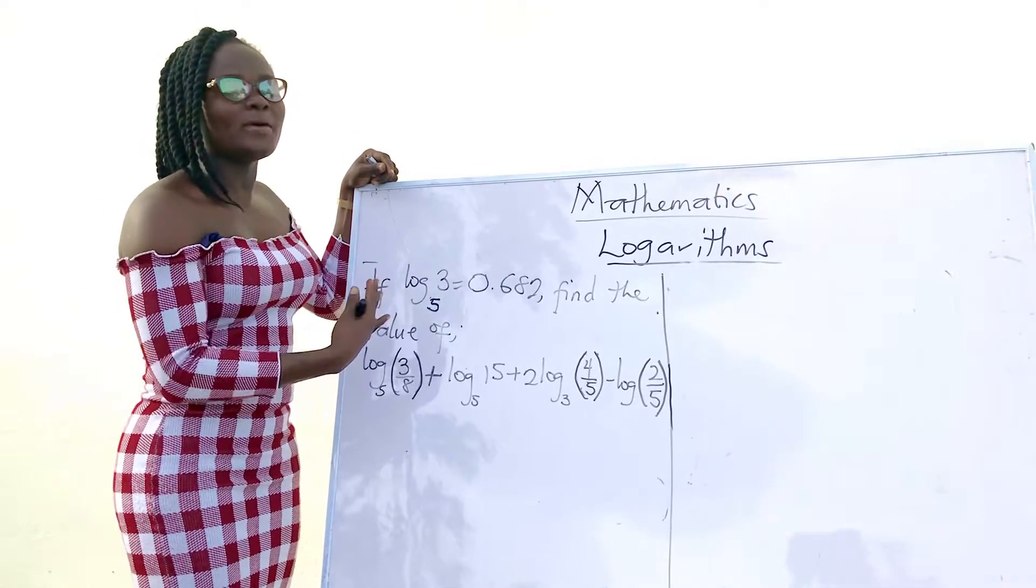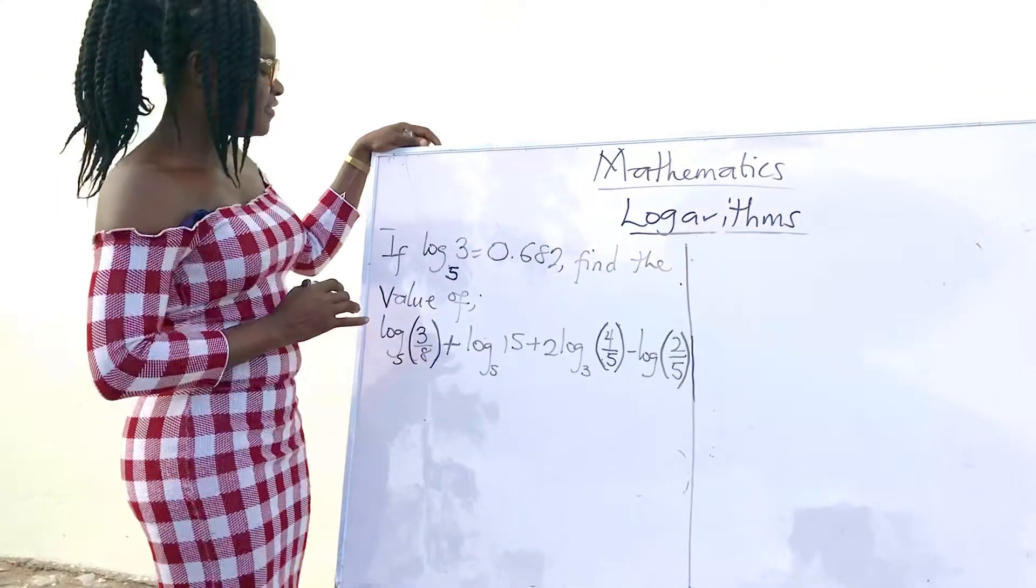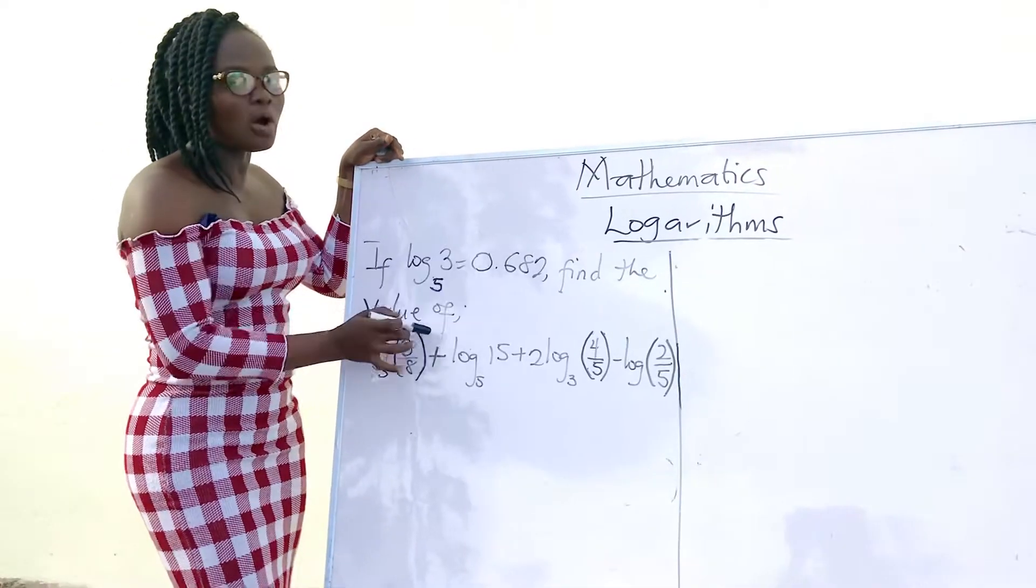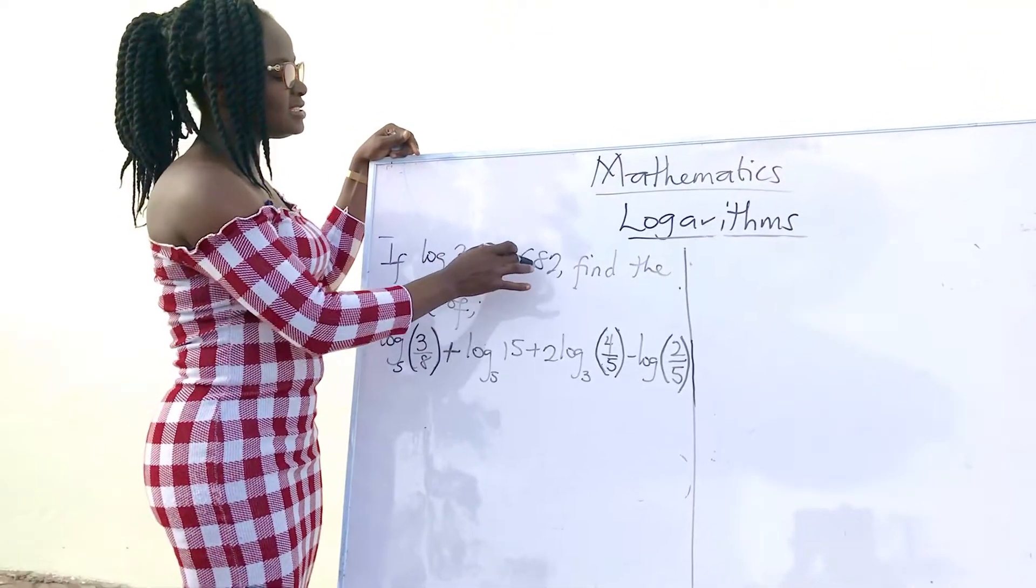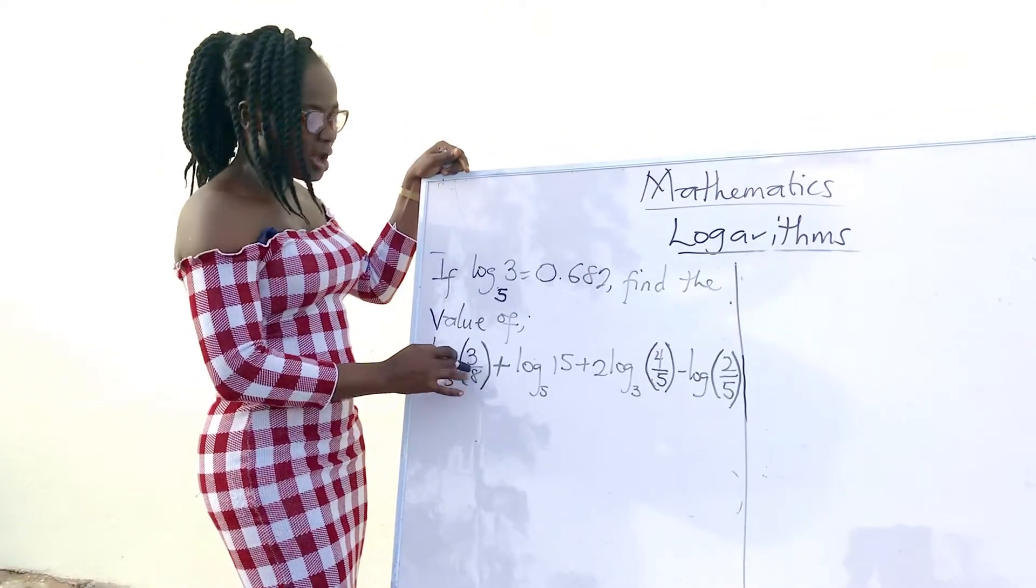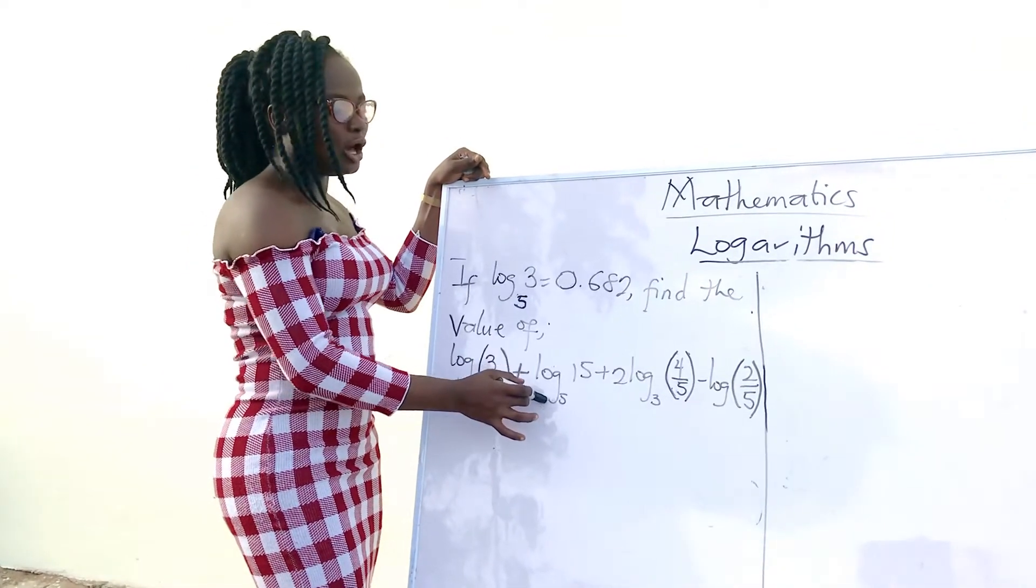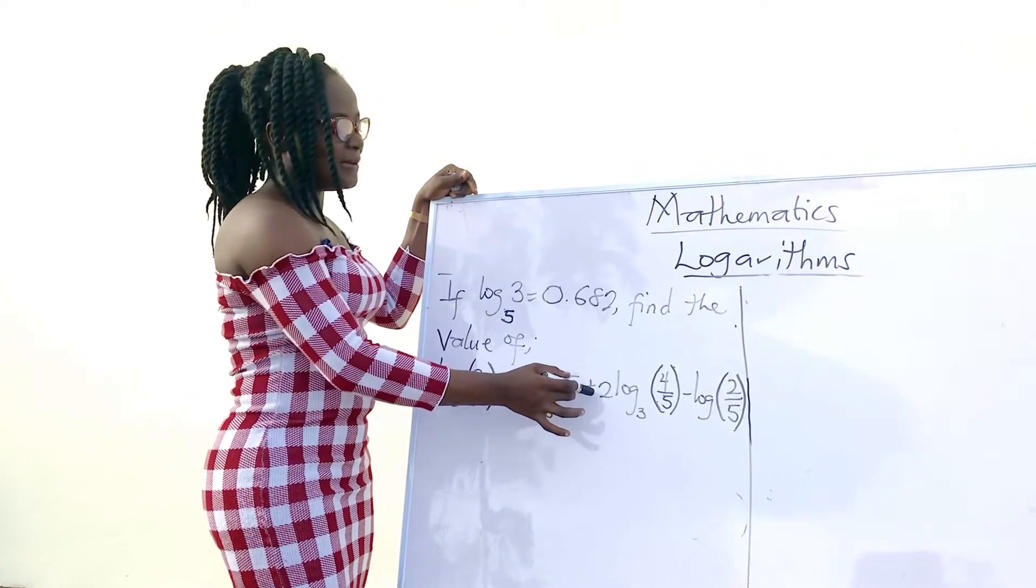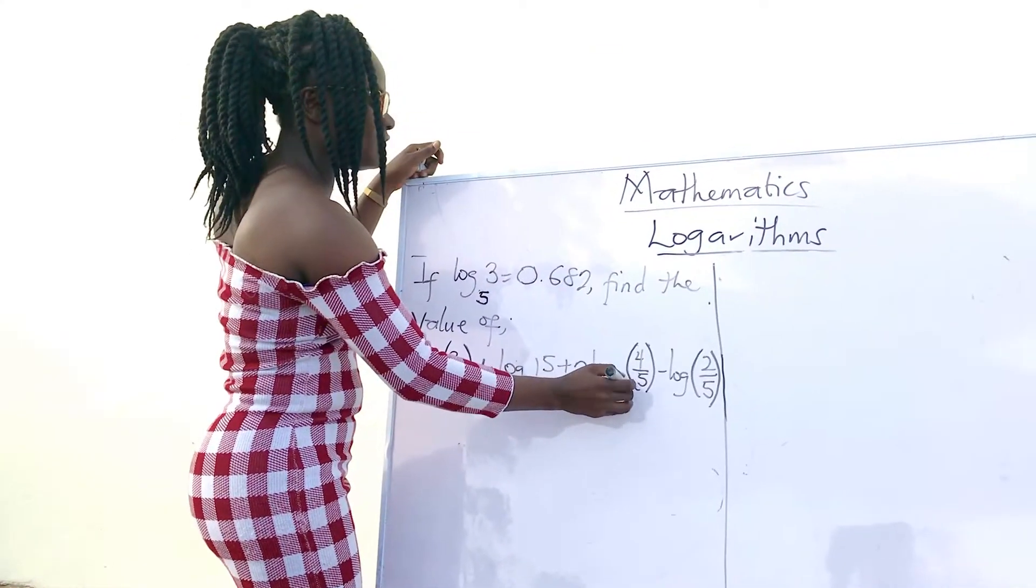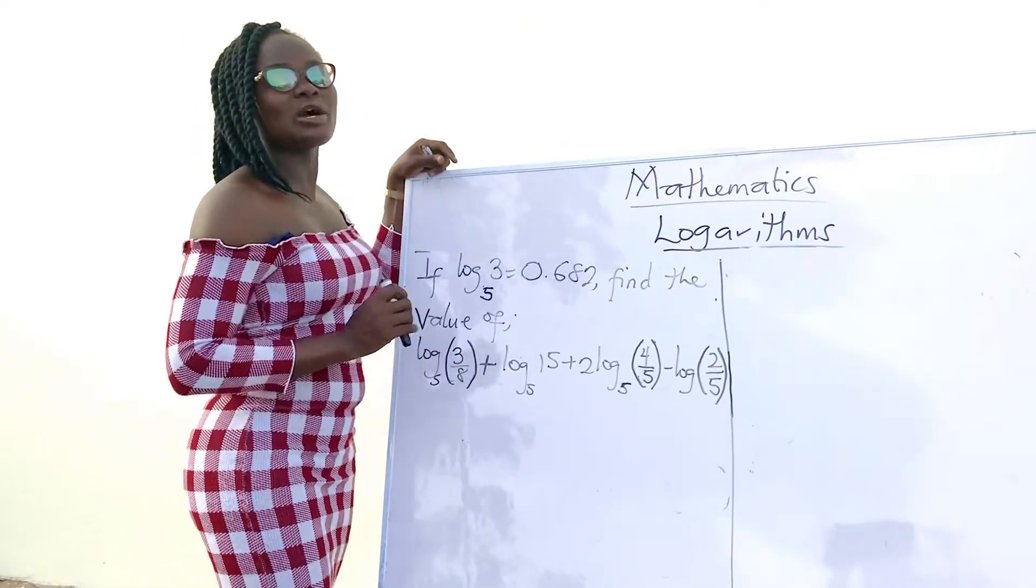So we have sample questions on the board. Let's go through it together. The question we have here is, if log 3 base 5 is equal to 0.682, find the value of log 3/8 base 5 plus log 15 base 5 plus 2 log 4/5 base 5 minus log 2/5. And that is the question.